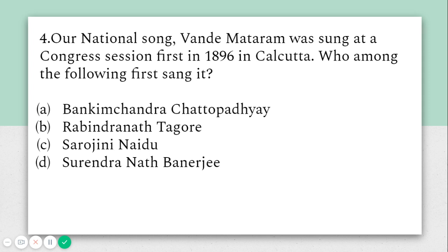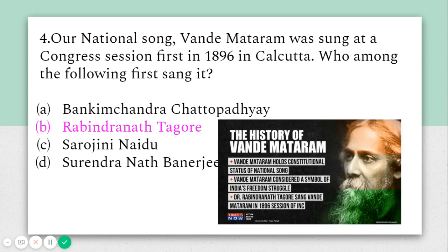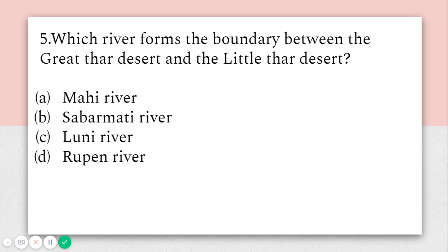The fourth question says: our national song Vande Mataram was sung at a Congress session first in 1896 in Calcutta. Who among the following first sang it? Options are Bankim Chandra Chattopadhyay, Rabindranath Tagore, Sarojini Naidu (also called the Nightingale of India), and Surendranath Banerjee. The correct answer is Rabindranath Tagore — he was the first person to sing the song at the Calcutta session of the INC in 1896.